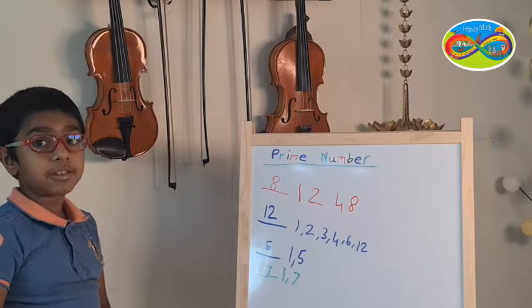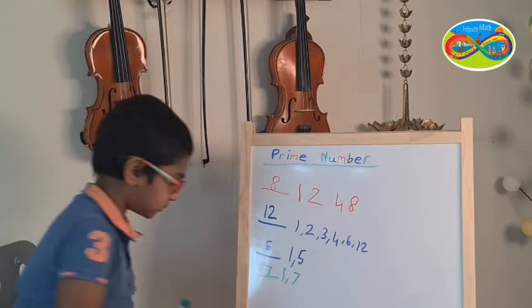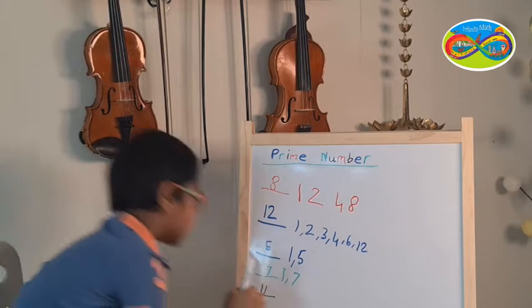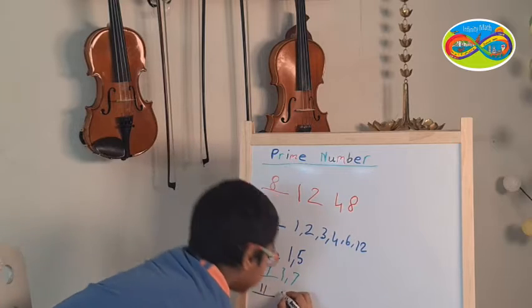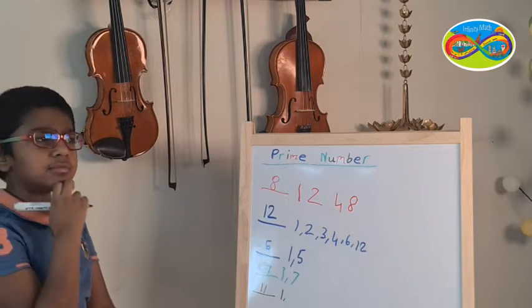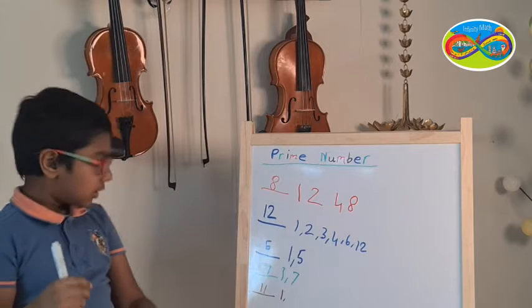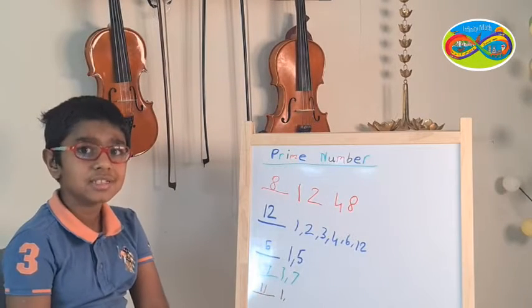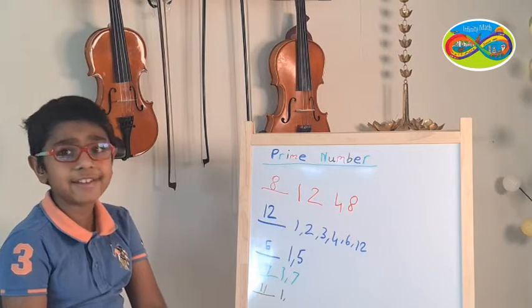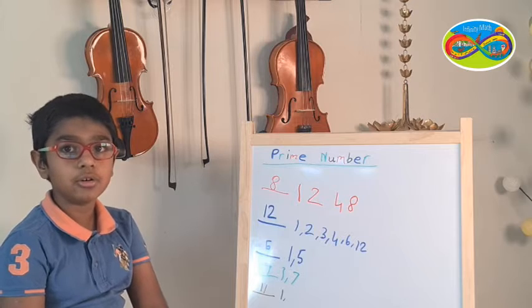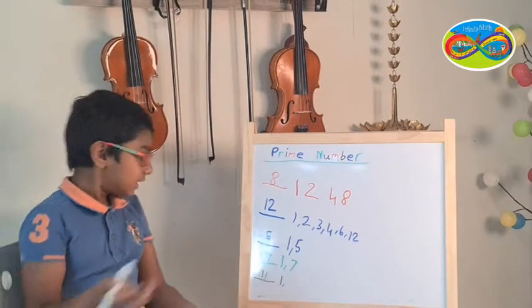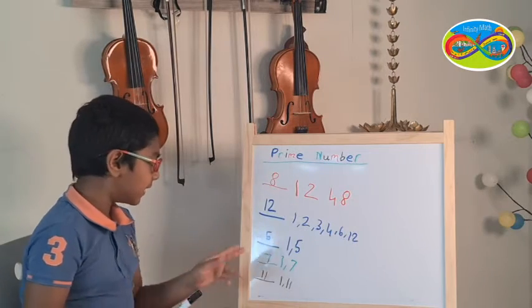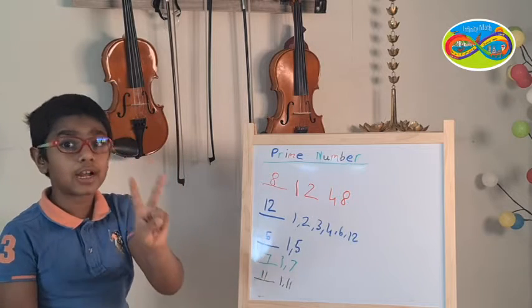Now let's see with 11. So 11. 1, yes. 2, no. 3, no. 4, no. 5, no. 6, no. 7, no. 8, no. 9, no. 10, no. 11, yes. Wait. 5, 7 and 11 only have 2 factors.